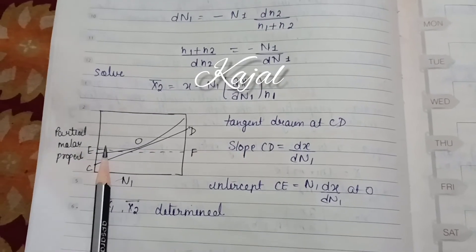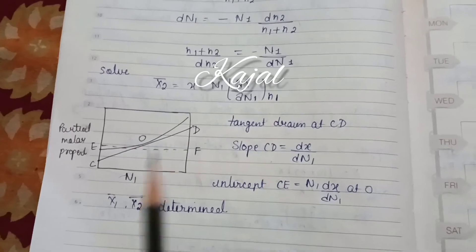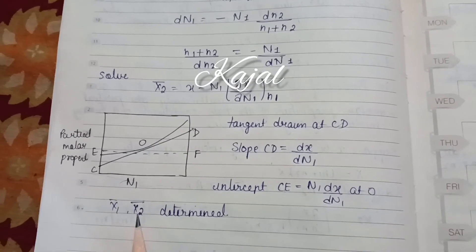We will get slope and graph. This is Partial Molar Properties. This is the mole number. We will get tangent and slope. With this help, we will find x1 and x2.